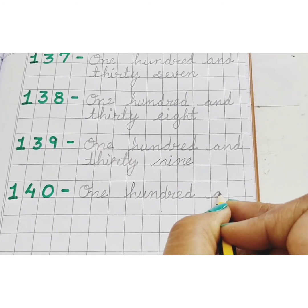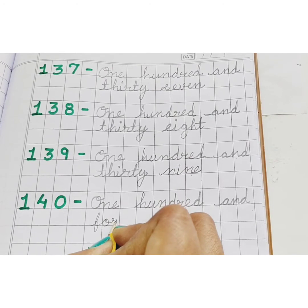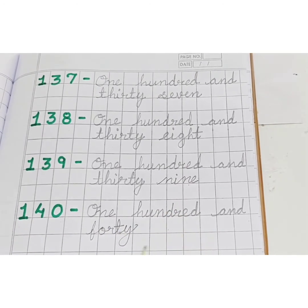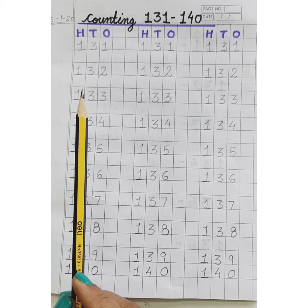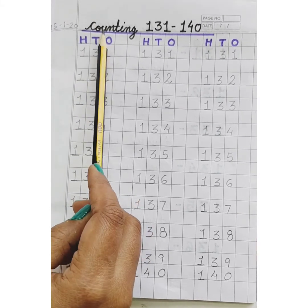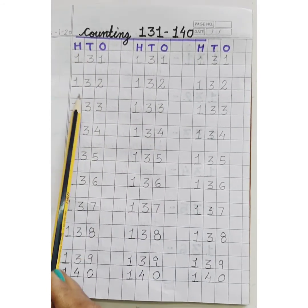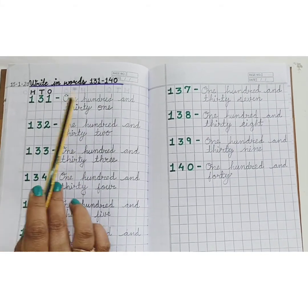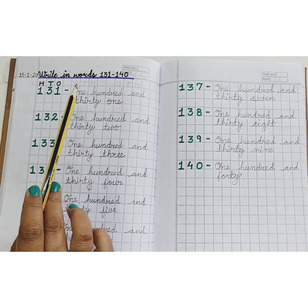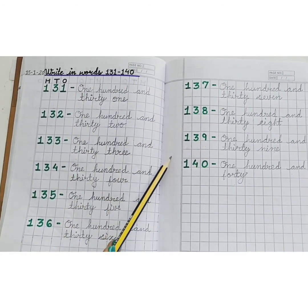N, E and forty — 40. 140. Children, write counting 131 to 140 like this in your copy, and write number names 131 to 140 like this in your copy. Thank you children, have a happy learning.